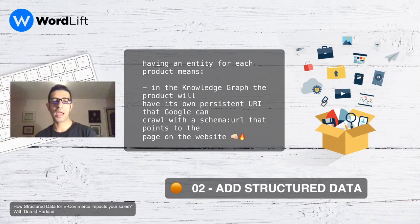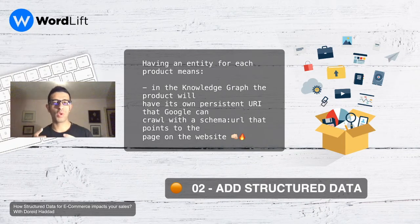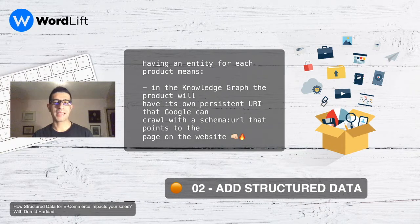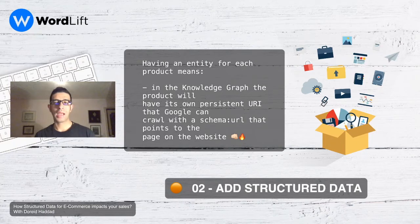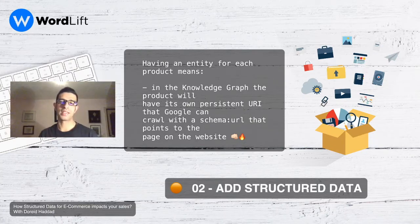That URI is something Google can crawl, with a schema URL that points to the page on the website. It's similar to gathering a lot of information and putting it all inside a box. This box represents the entity that has a unique ID — a unique URI — that Google can crawl and see all the information inside. Google can see all the information inside this entity. And the best part is still to come, which we'll discover in the next step.